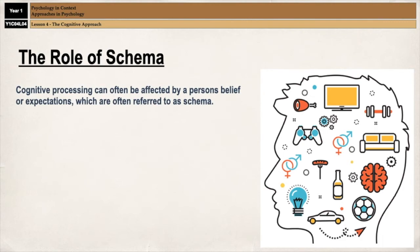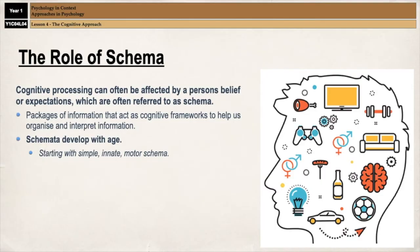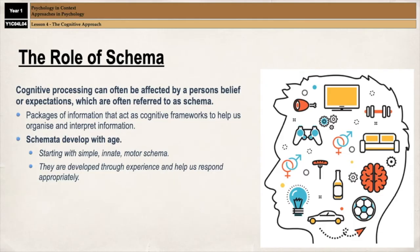Cognitive processing can often be affected by a person's beliefs or expectations, and these beliefs and expectations are referred to as schema. Schema act as cognitive frameworks to help us organise and interpret information coming in from the environment. They develop with age, and we generally start with very simple, innate motor schema, like grabbing, wiggling our toes, or sucking things, as you often see babies do. They are then developed through experience with our environment and help us to respond to situations appropriately.